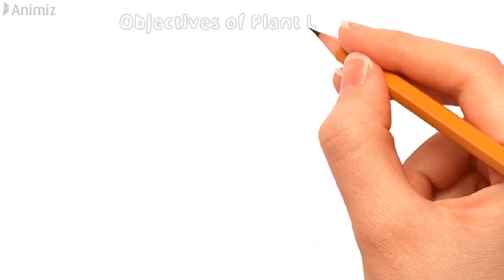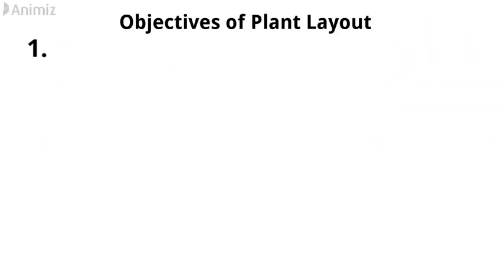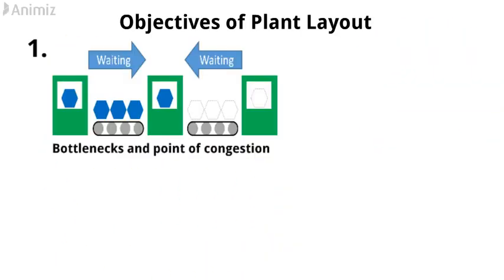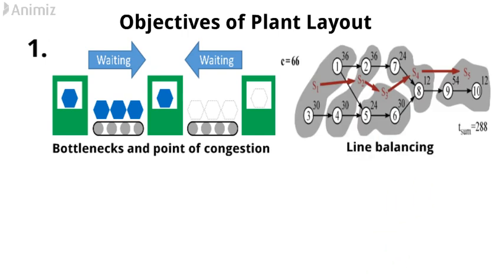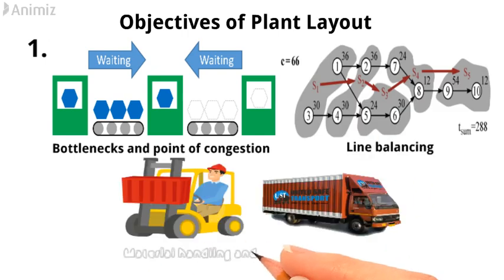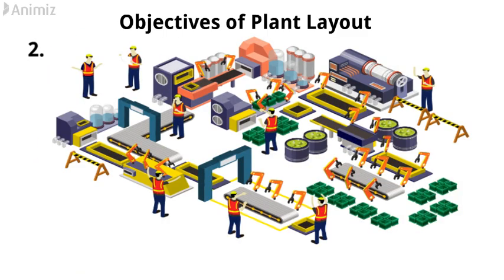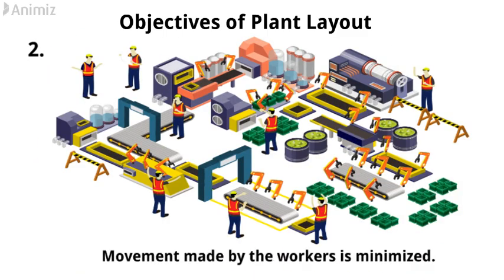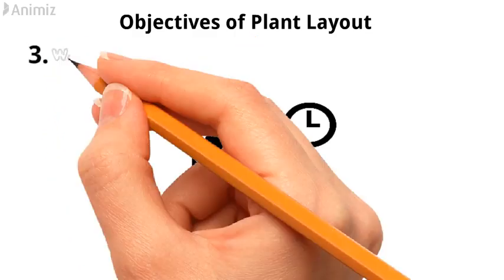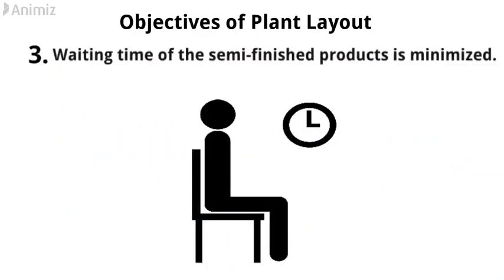Objectives of Good Plant Layout. 1. Bottlenecks and points of congestion are eliminated by line balancing, so that material handling and transportation is minimized. 2. Workstations are designed suitably, so that movement made by the workers is minimized. 3. Waiting time of the semi-finished products is minimized.